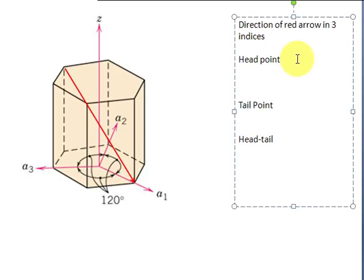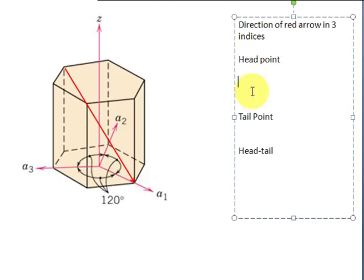First, you find the head point. Now, the head point here is very simply that you just move from the origin one unit cell length in A1. You don't move in A2 or Z. So the head point here will be 1, 0, 0.